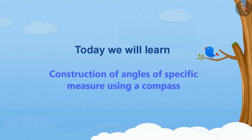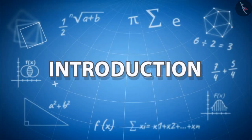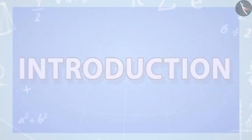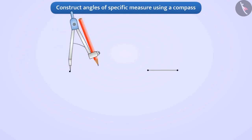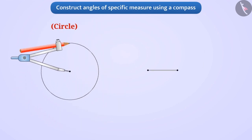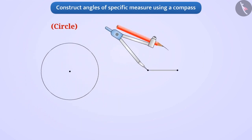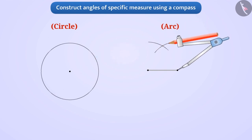Today we will learn construction of angles of specific measure using a compass. You already know that compass is used to draw circles and arcs. Can we also draw an angle using it?